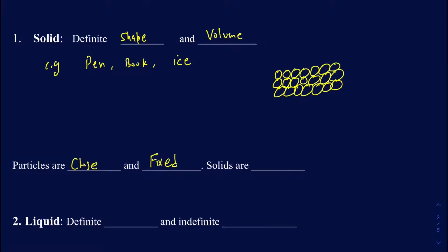When we talk about whether solids are compressible or incompressible, solids fall into the category of incompressible. What that really means is: if I have a pencil and I try to press it, it doesn't change the size or volume of the pencil. That's because those particles are so close to one another that they cannot get any closer, and as a result they are incompressible.